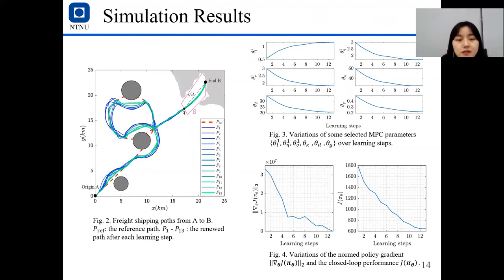And this is the simulation results. As you can see, this is the freight mission path from the origin A to the endpoint B. And from P1 to P13, it's the training episodes. For P13, the path is the best one, and also guarantees the safety. And this is the variations of some selected MPC parameters over learning steps. As you can see, all of them are getting converged over learning.